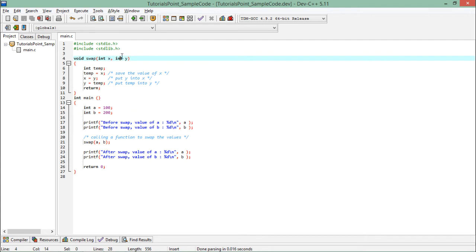And these x and y will also take the four bytes each. So whenever the swapping will be done, the values will be swapped between x and y. But the value of a and b will remain same.